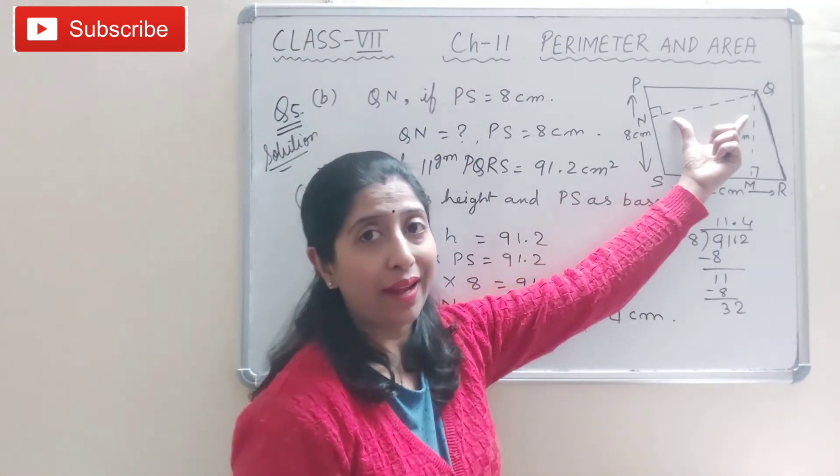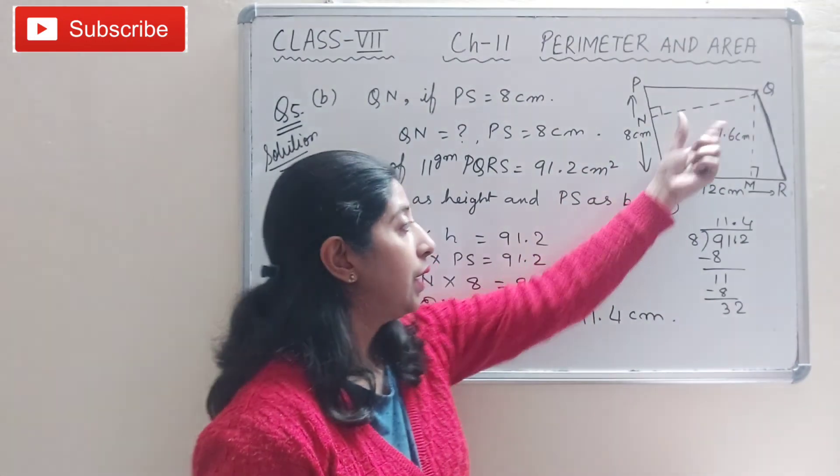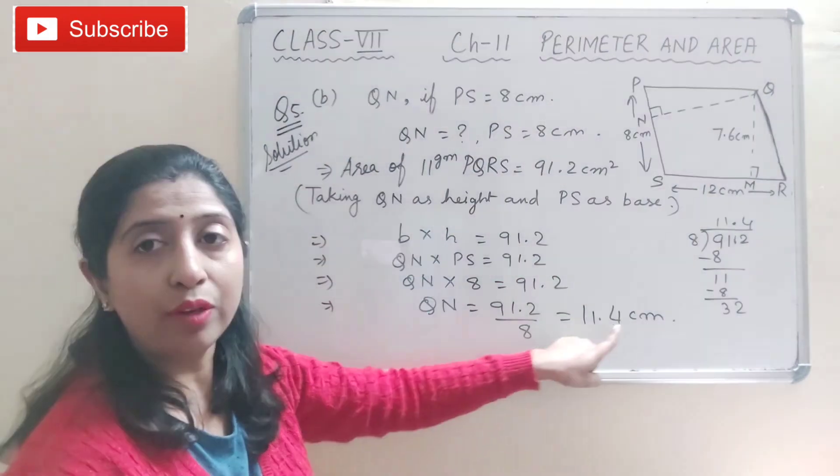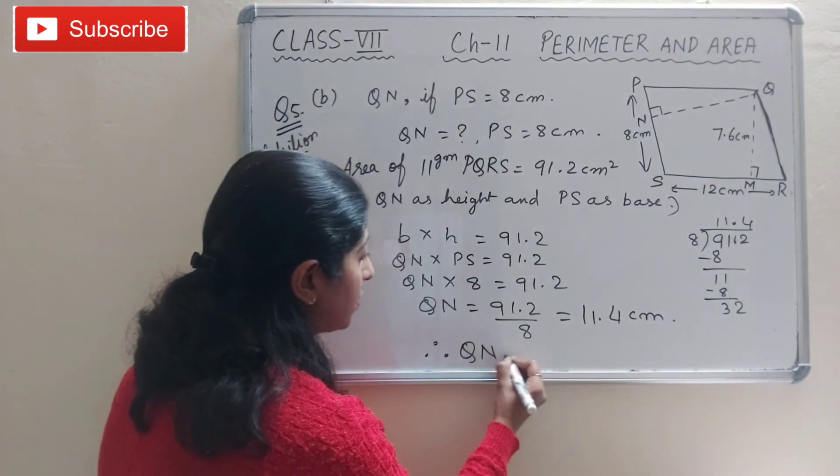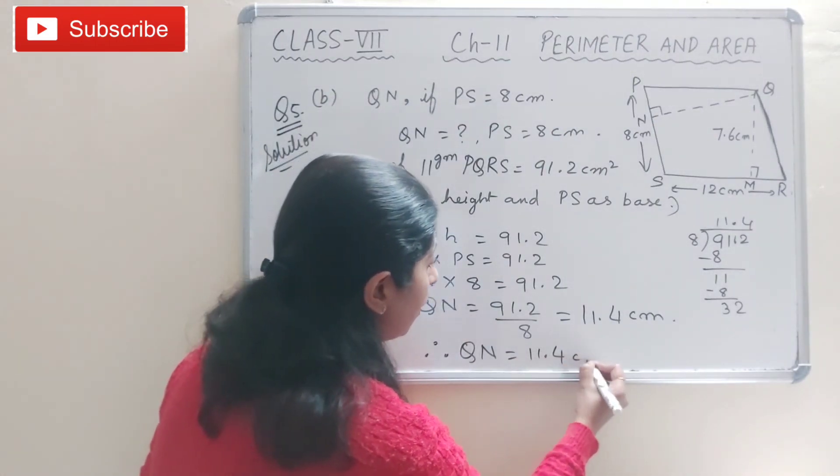So this missing height QN that we had to find out is 11.4 cm. We will write here: therefore QN is equal to 11.4 cm.